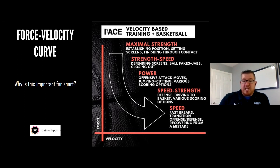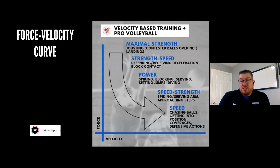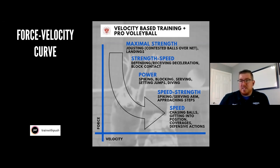At the speed end, basketball movements include fast breaks, transition offense and defense, and recovering from a mistake. This diagram was taken from the Instagram account Train With Push, another company with a wearable velocity-tracking device. In volleyball — a no-contact sport — force transfers to contested balls over the net in an isometric blocking position, while the speed range covers spiking, serving, setting, chasing balls, and defensive coverages.